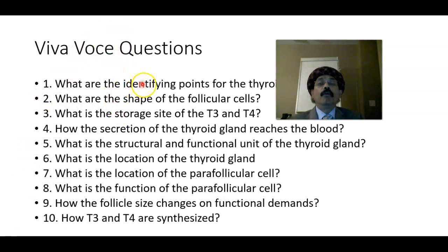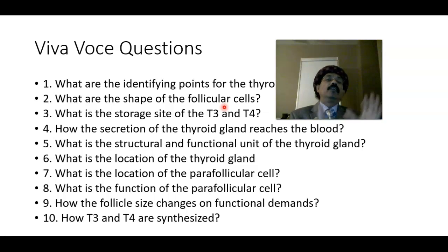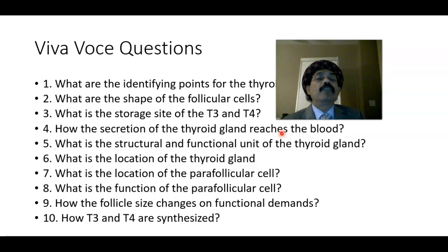Review questions: The identifying points for a thyroid gland slide are thyroid follicles, follicular cells, parafollicular cells, connective tissue with reticular fibers, and fenestrated capillaries. Follicular cell shape is simple cuboidal in normal thyroid, low columnar in hyperthyroidism, and flattened or simple squamous in hypothyroidism. In hypothyroidism, follicle size increases; in hyperthyroidism, follicle size decreases but cell height increases. Thyroid hormone reaches the blood via fenestrated capillaries — it is an endocrine gland with no duct.